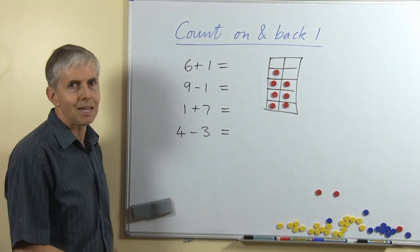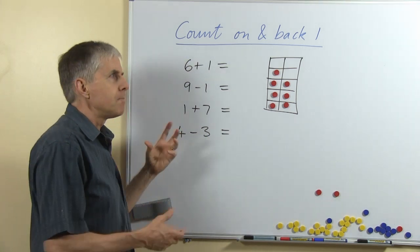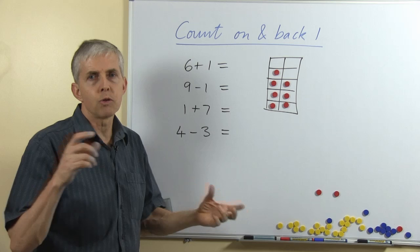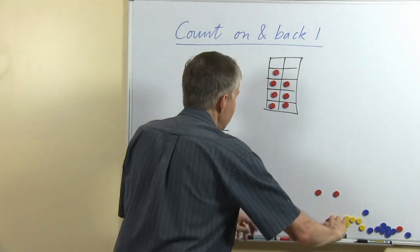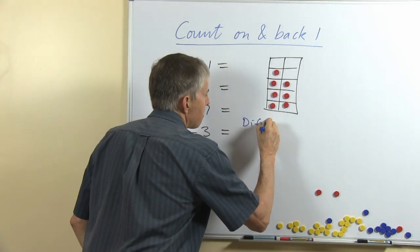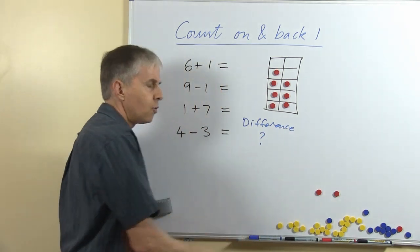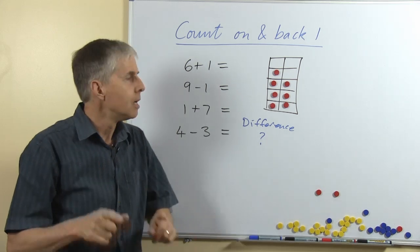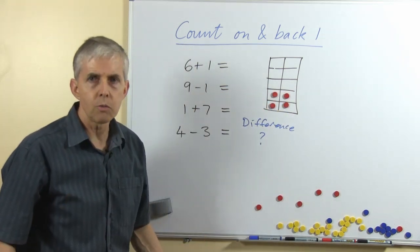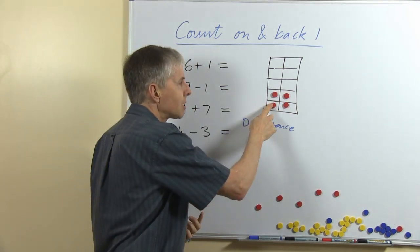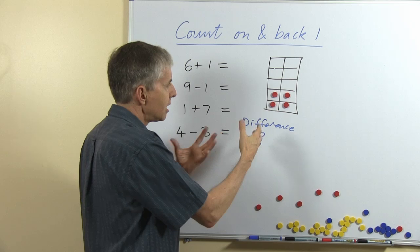The 4th sort is the trickiest. 4 take away 3 relies on students knowing that 4 take away 1 is 3, or 3 plus 1 is 4, or basically what we're looking at here is what's the difference between these two numbers. In the mathematical sense, 4 and 3 are next to each other on the number line, they're next to each other if we show them using counters. There are 4, how many would we have if we took away 3? We're not counting back 3 this time, we're just saying what's the difference between that number and that number. So using a number line, using a 10 frame, that can easily be shown.